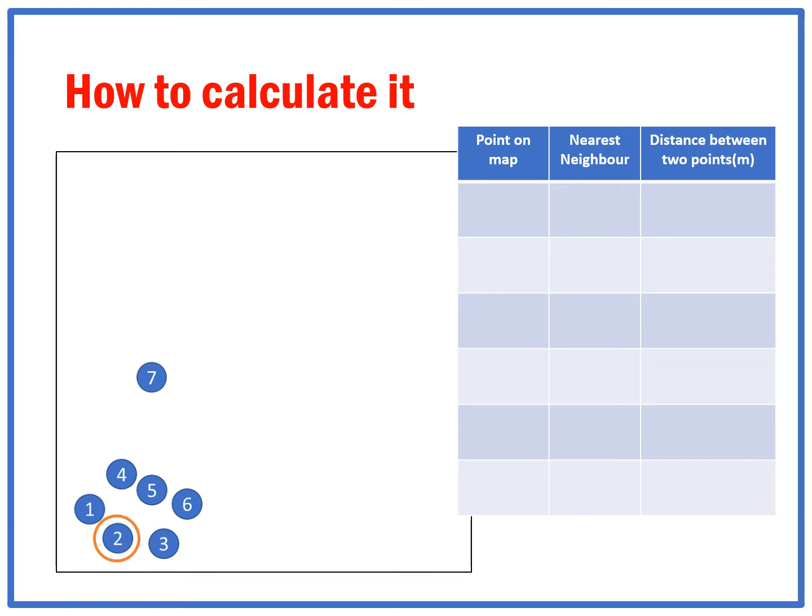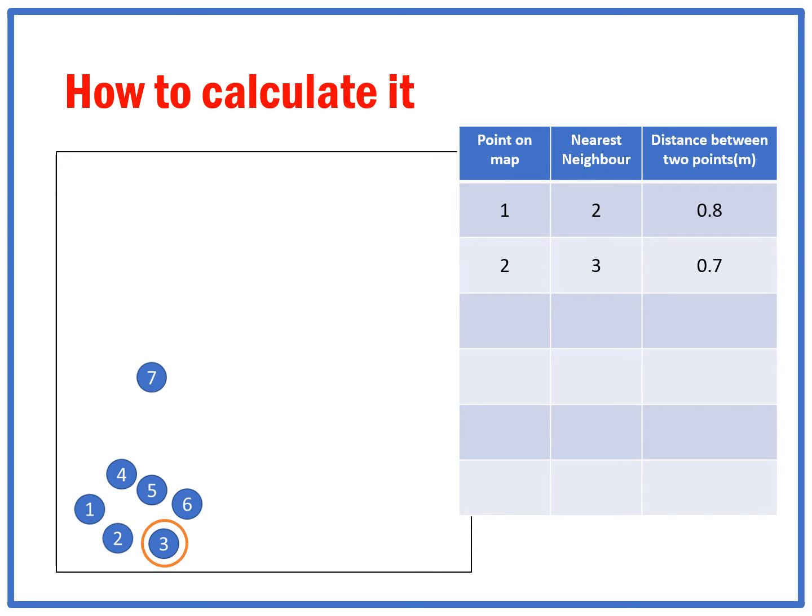We start with point one. The nearest neighbor to point one is two, and we measure that distance as 0.8 meters. Then we look at point two, and the nearest neighbor to point two is three, and that's 0.7 meters.